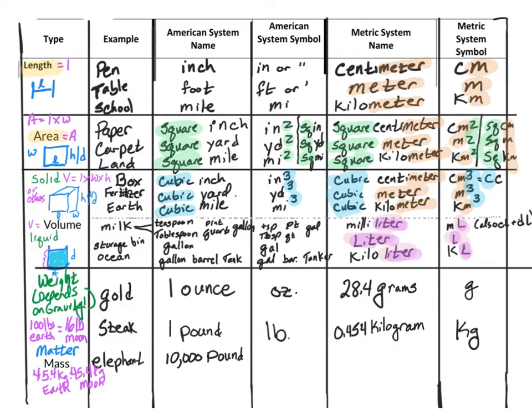An elephant weighs around 10,000 pounds, or five tons. In the American system, ton is abbreviated T. In the metric system, that elephant weighs about 4,500 kilograms. Notice that everything related to mass has the unit gram somewhere in it.